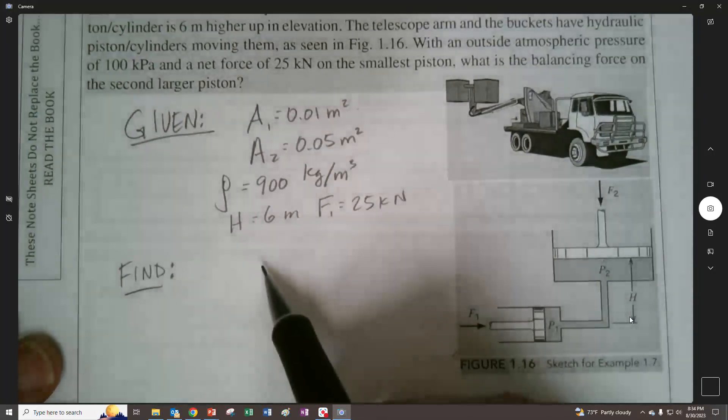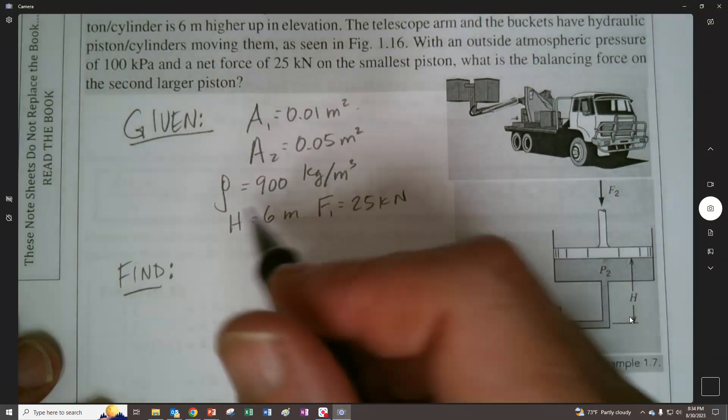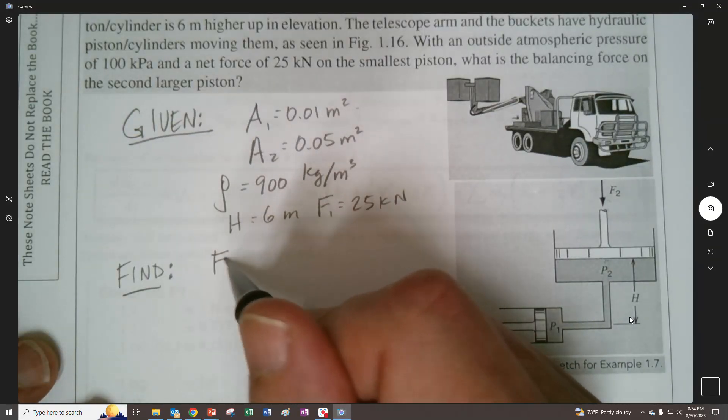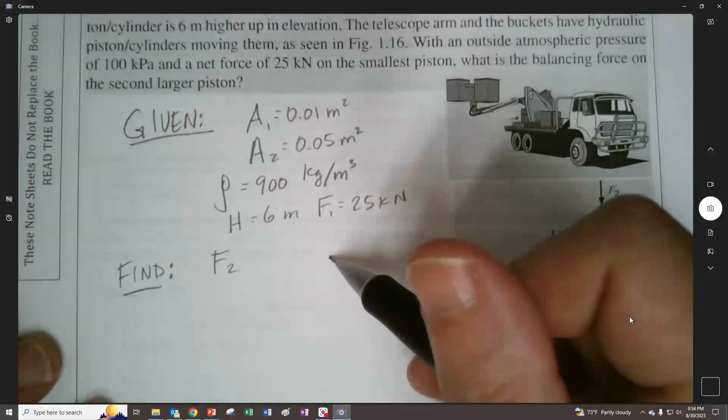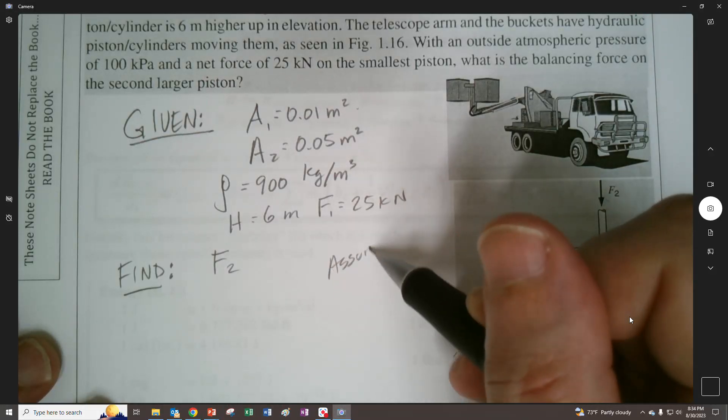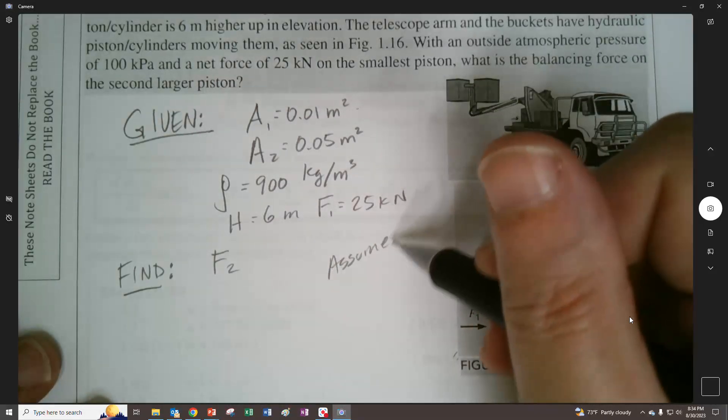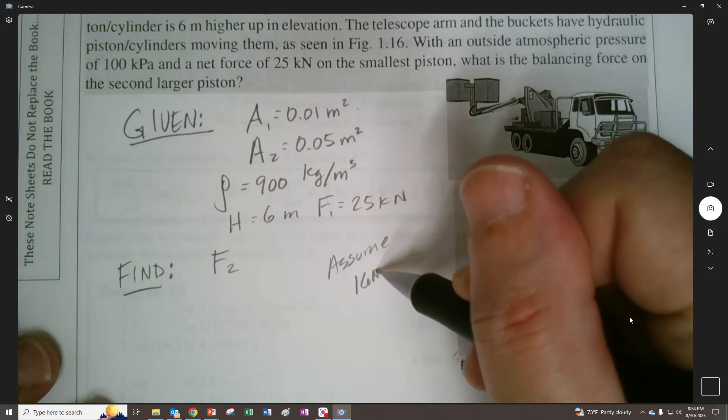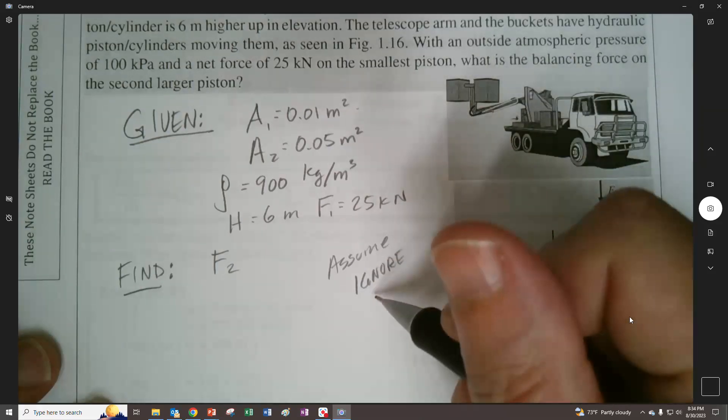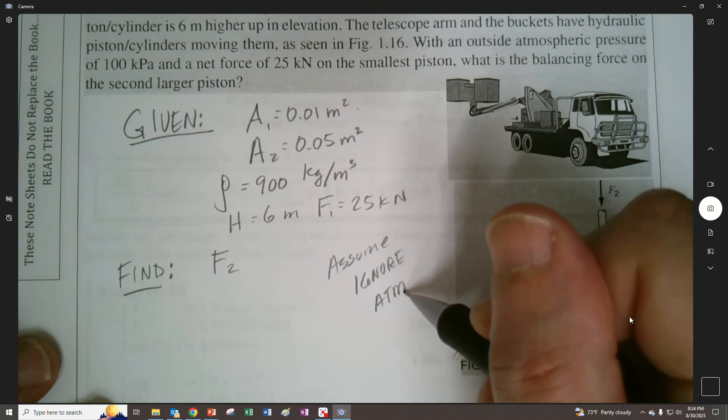All right, so one of the things we're going to do is we're just going to make the command decision. Oh, I didn't write the find. F2, right? That's a big thing. So assume, ignore. You're going to assume you ignore? Sure. Assume you ignore atmospheric pressure.